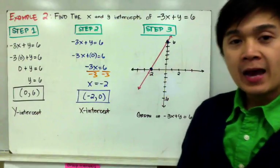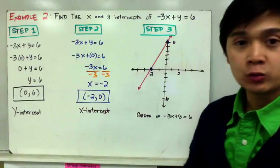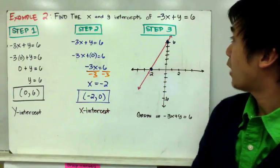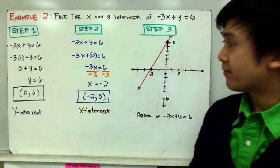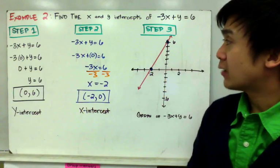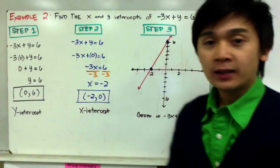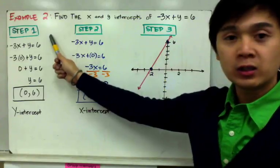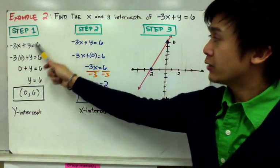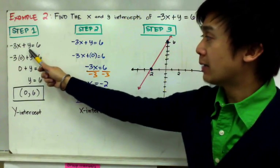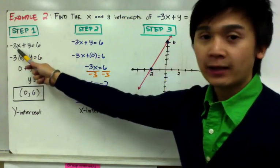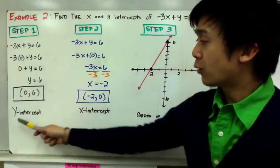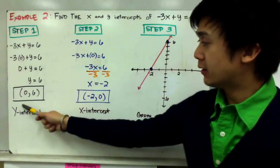For example 2, we need to find the x and y-intercept of negative 3x plus y equal to 6 in order to graph it. We set each variable to 0 to find the intercepts. For step 1, finding the y-intercept means setting x to 0, which leaves y equal to 6. So the y-intercept is at (0, 6).